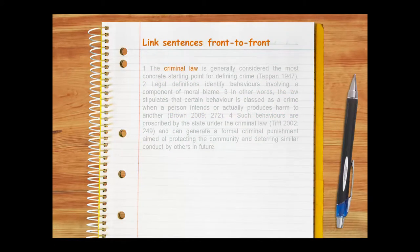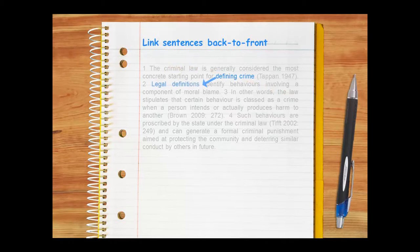When you link sentences front-to-front, you take ideas from the fronts of sentences and include related ideas in the front of subsequent sentences. When you link ideas back-to-front, you take ideas from the backs of sentences and use related ideas at the front of other sentences.